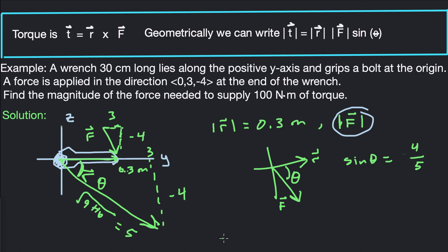We've got our torque. Our torque is supposed to be 100 newton meters, or at least our magnitude of our torque should be 100 newton meters. Our radial vector magnitude is 0.3. Our magnitude of force is unknown, and our sine theta is 4 fifths.